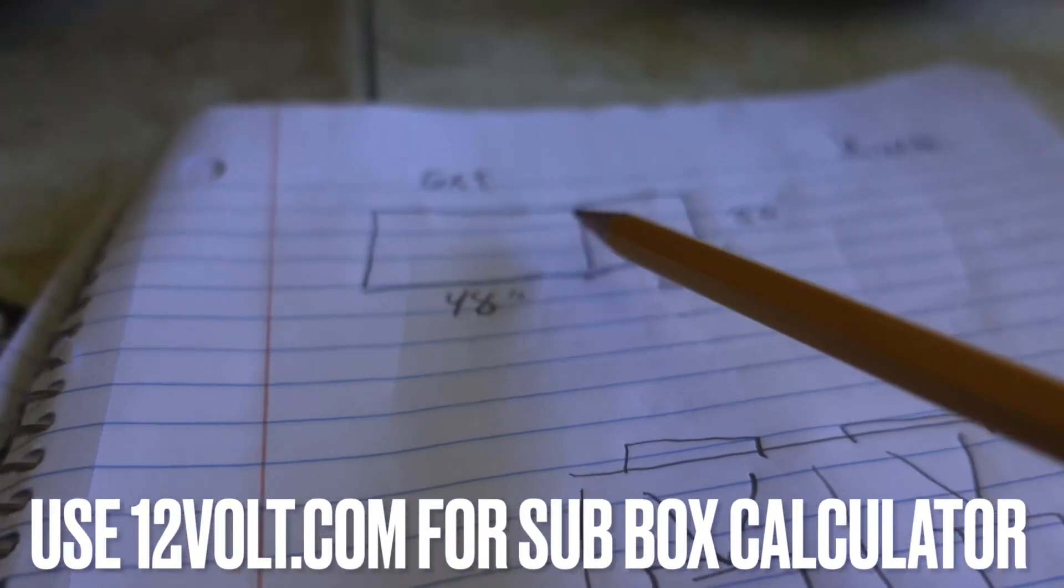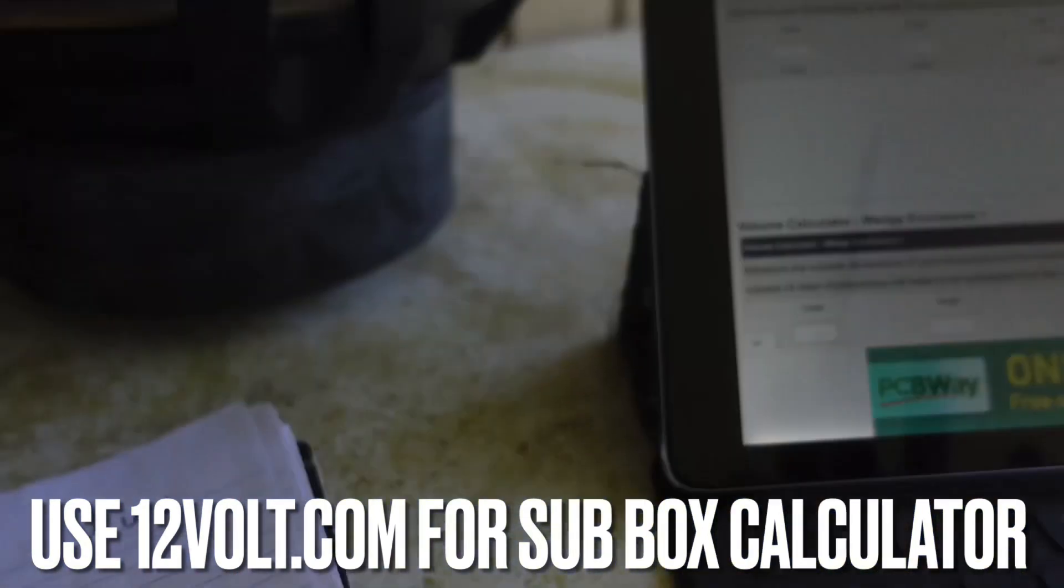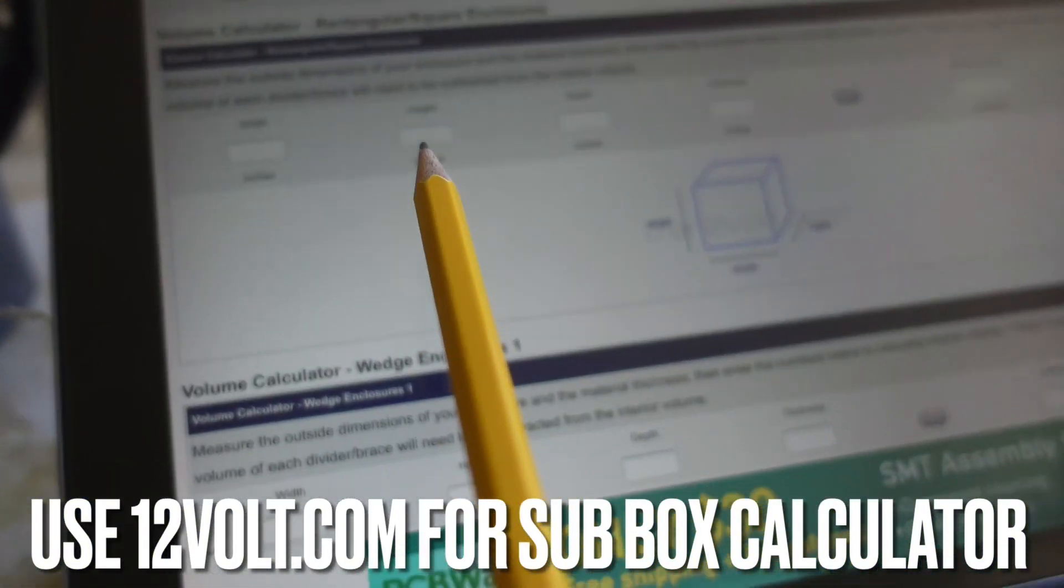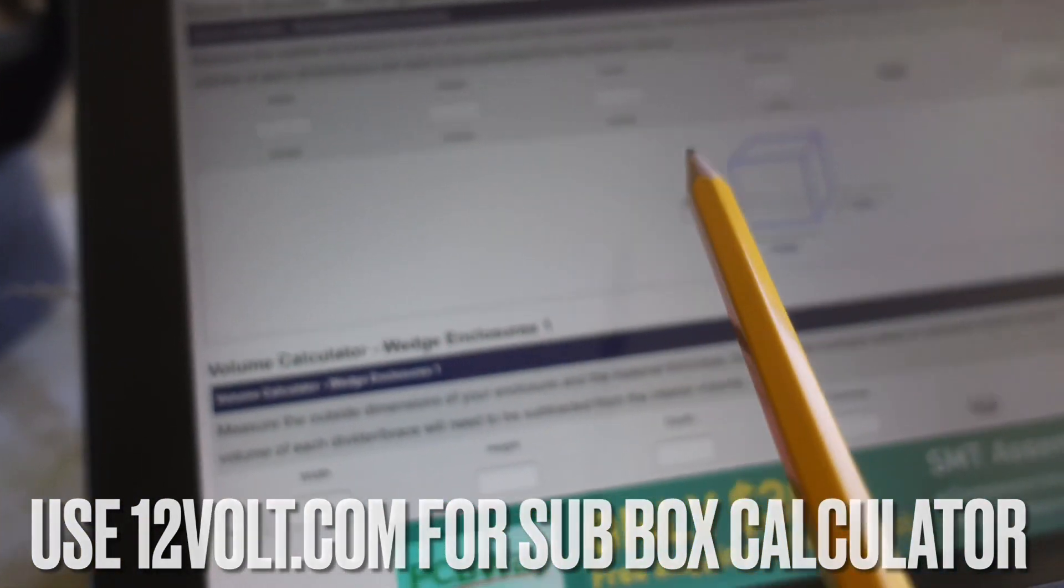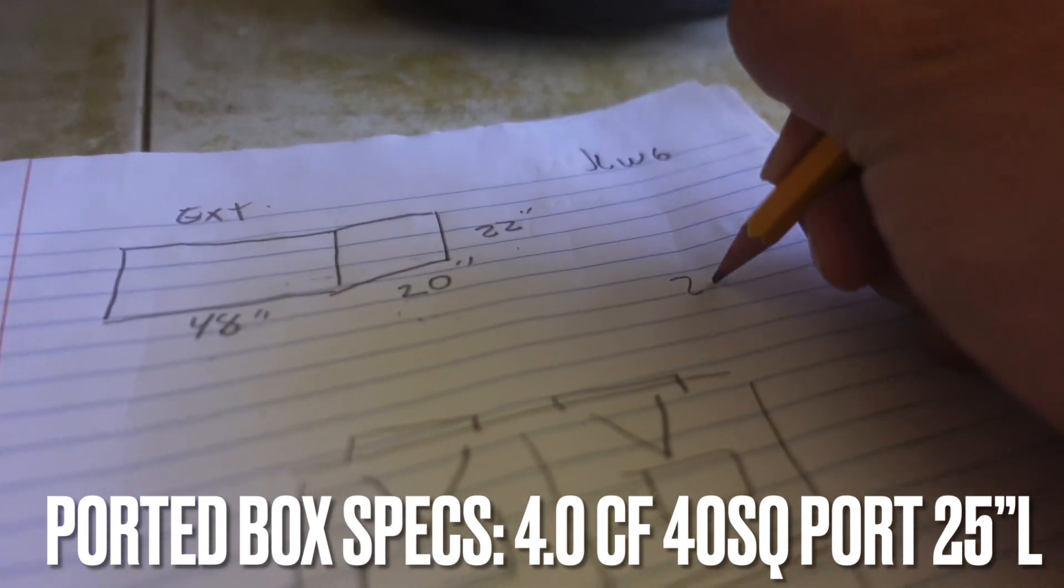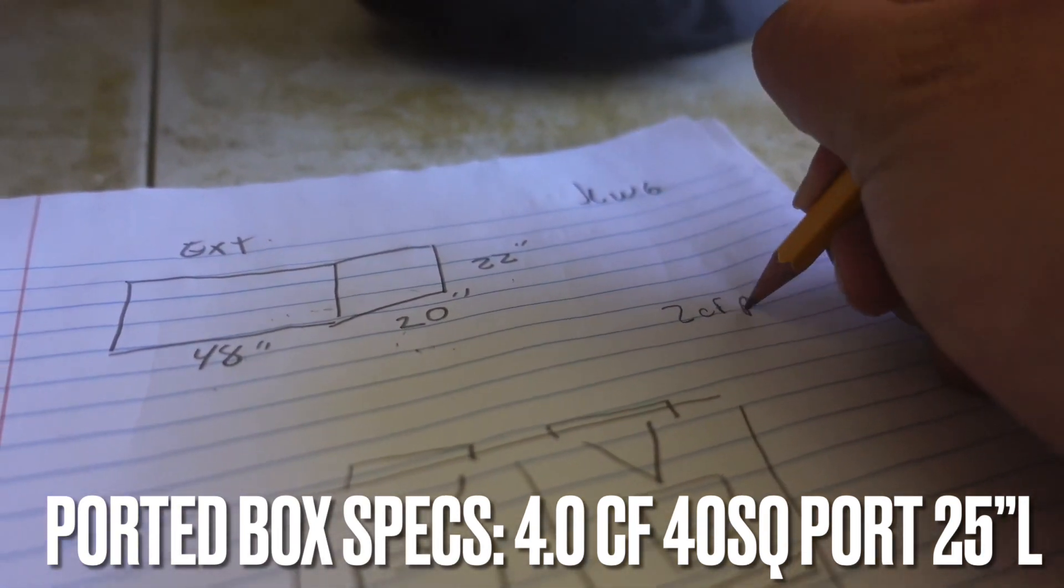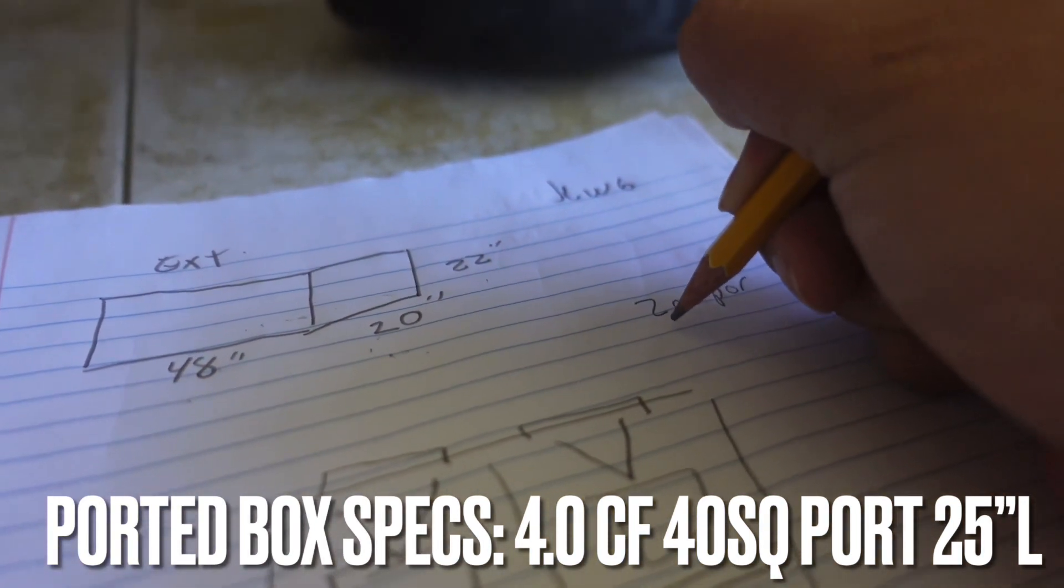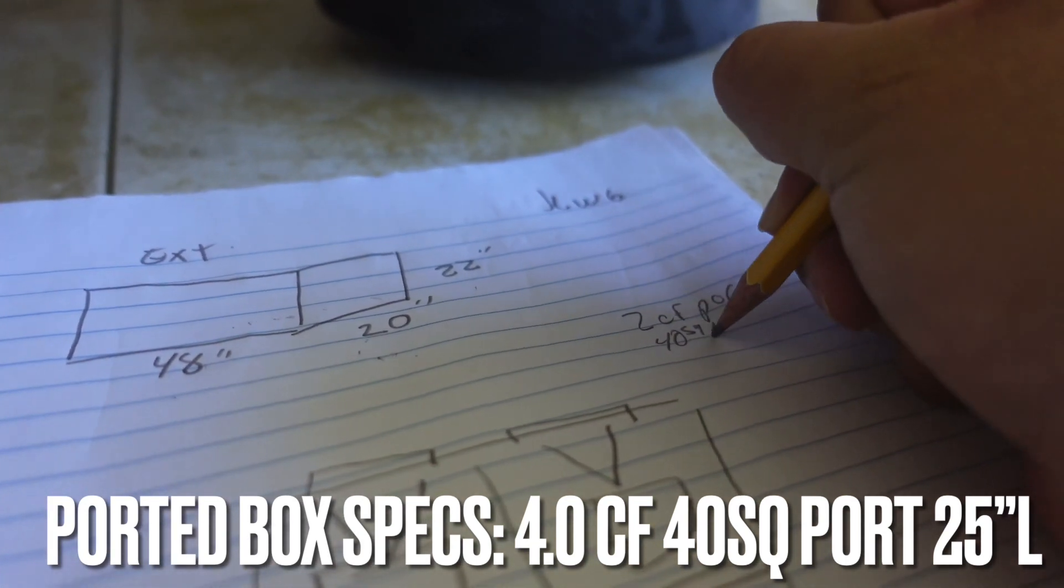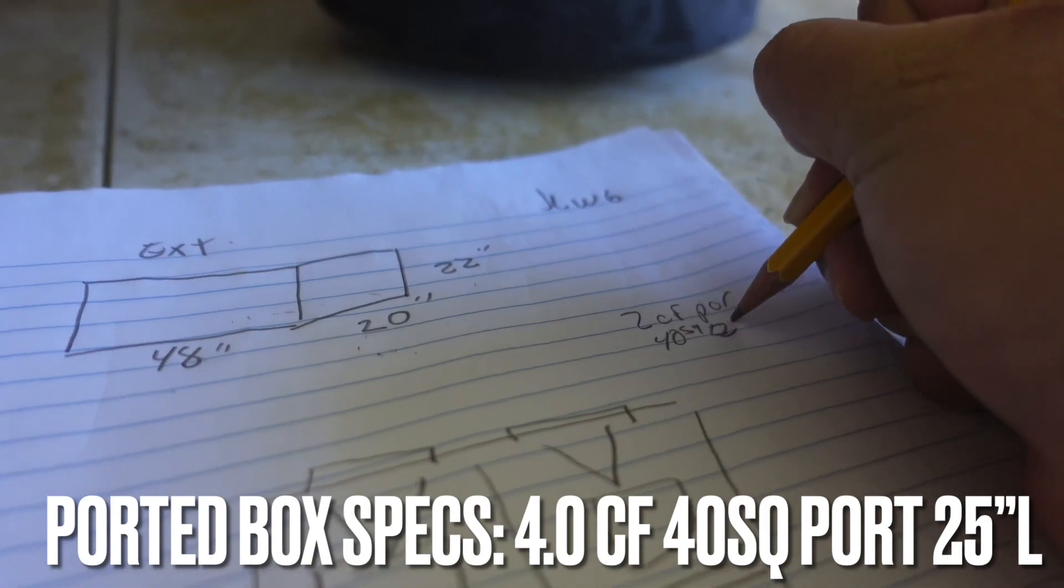Before we get started, let's see how much air space is inside this guy with our trusty 12-volt.com box calculator volume calculator. We're going to do two cubes per sub and then a 40-square-inch port, 25 inches long.